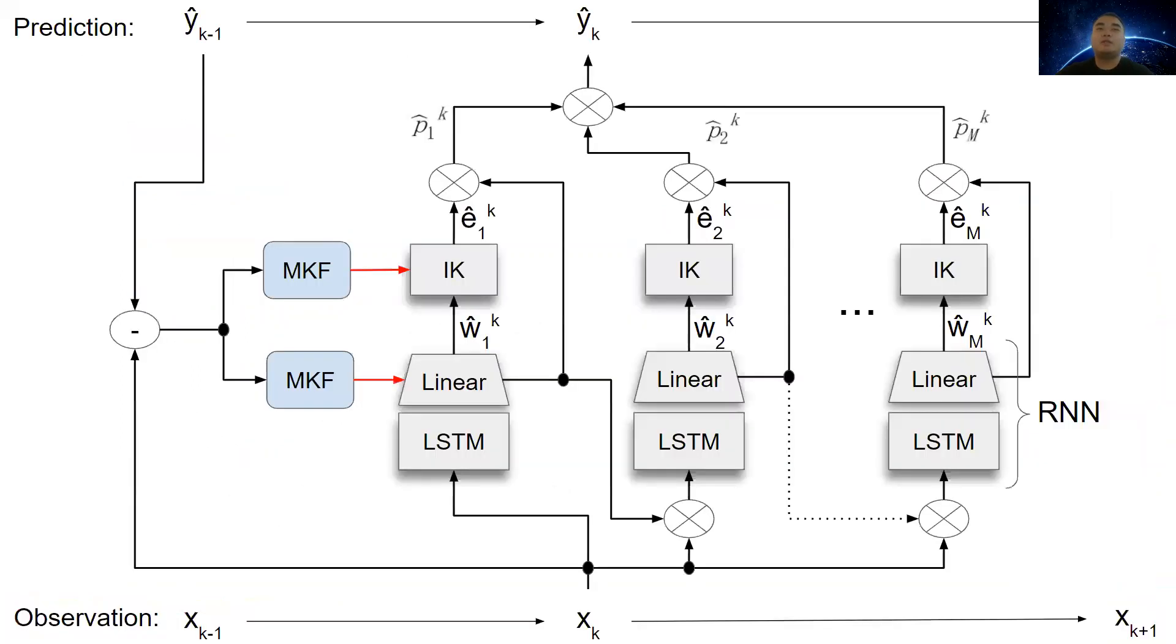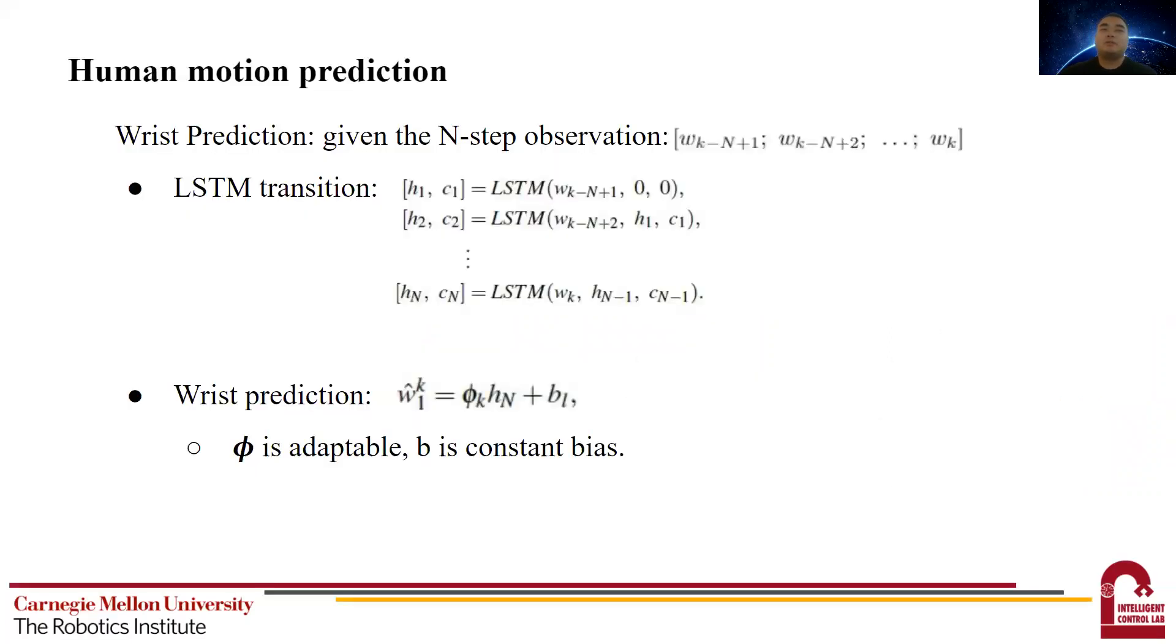And here we show the detailed full design of our model, and I will talk about the wrist prediction first. The input to wrist prediction is the observation of the previous N steps wrist positions. The transition within a single LSTM cell is shown in this picture.